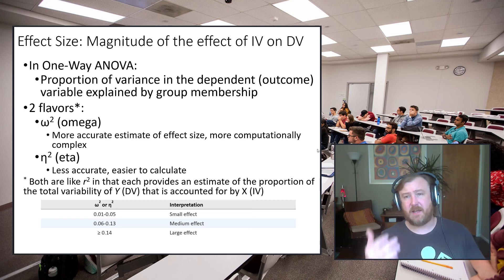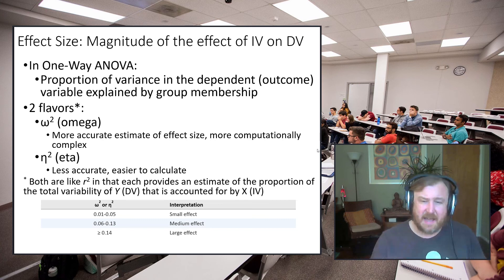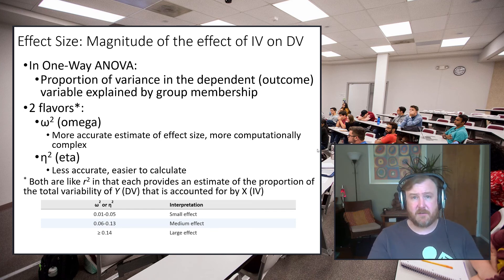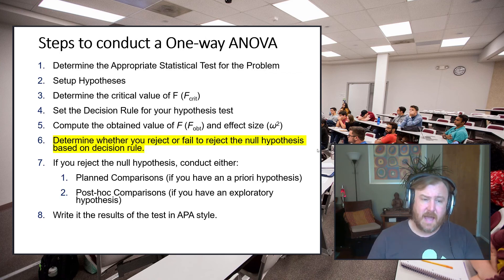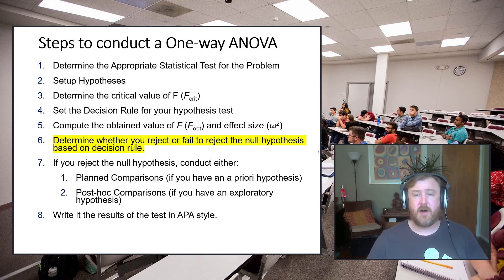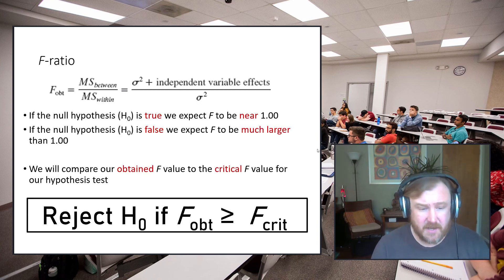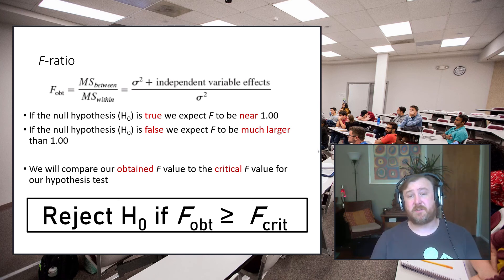Eta squared is simply sum of squares between over sum of squares total — slightly less accurate and more likely to yield inflated estimates since it doesn't include degrees of freedom corrections. Once you've computed eta squared or omega squared, interpret it based on small, medium, or large thresholds. After computing effect size, we determine whether to reject or fail to reject the null hypothesis based on the decision rule from step four: reject the null if F-obtained is greater than or equal to F-critical.